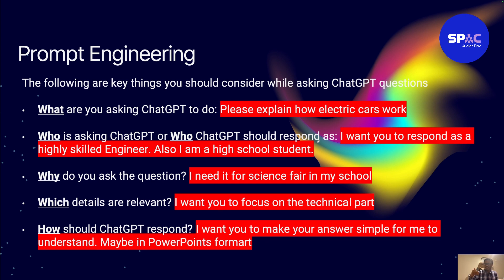Knowing who is asking matters because if AI knows it's talking to a kid, it will explain things in a very simple way. If AI knows it's talking to an electrical engineer or a doctor, it will explain the response in a way that person will understand. For our example, you can say: 'I want you to respond as a highly skilled engineer, and I am a high school student.' You're giving AI more information about how it should answer.